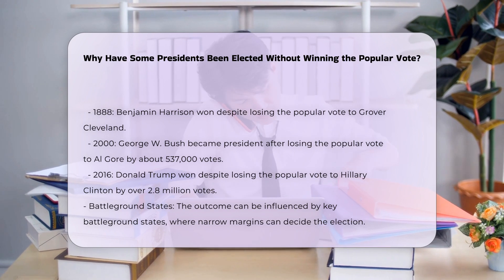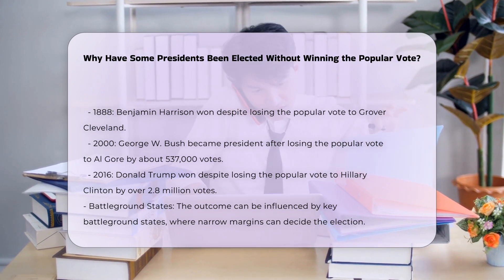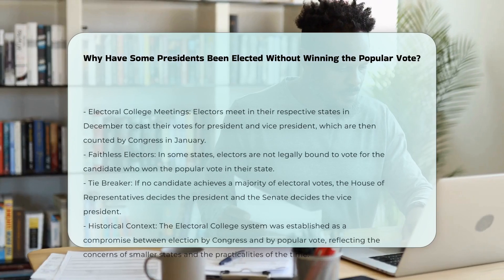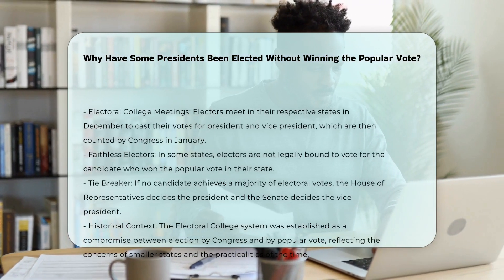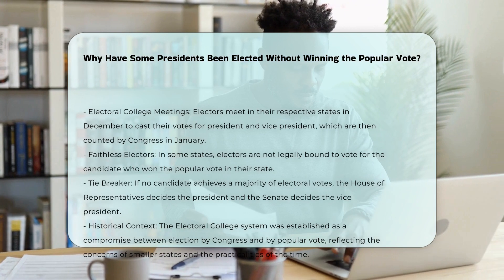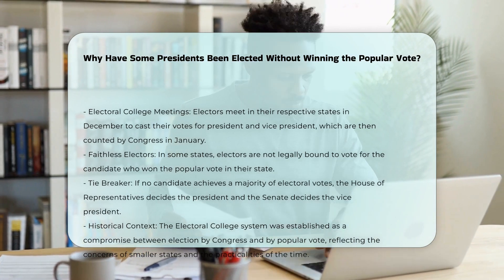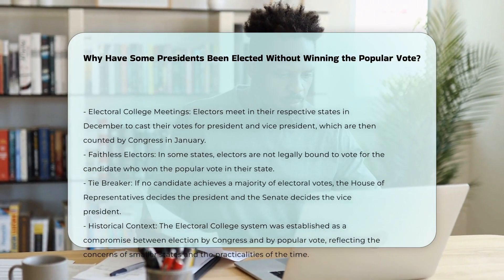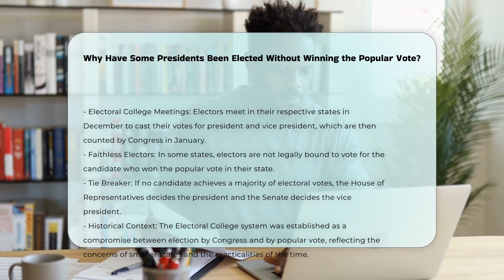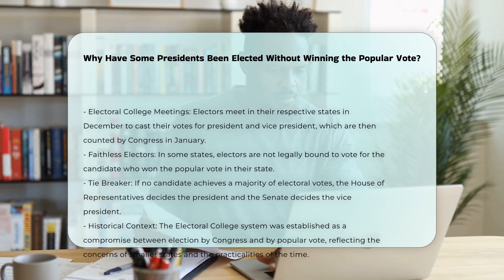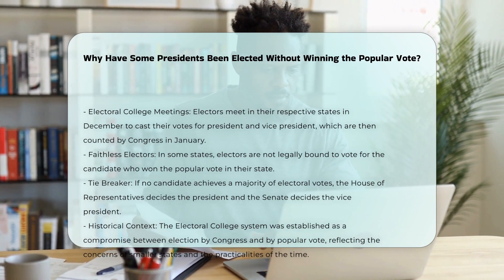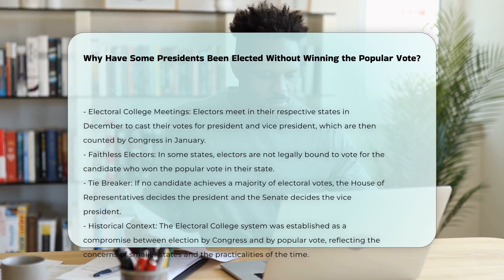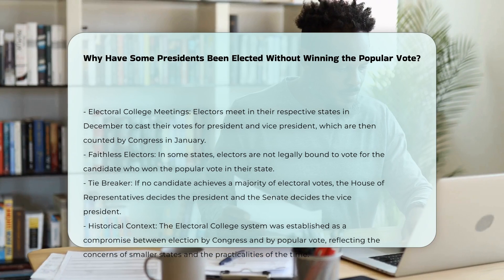In 2000, George W. Bush became president after losing the popular vote to Al Gore by about 537,000 votes. Bush won because he carried Florida by a margin of just 537 votes. In 2016, Donald Trump won the presidency despite losing the popular vote to Hillary Clinton by over 2.8 million votes. Trump won key battleground states like Michigan, Wisconsin, and Pennsylvania by narrow margins.